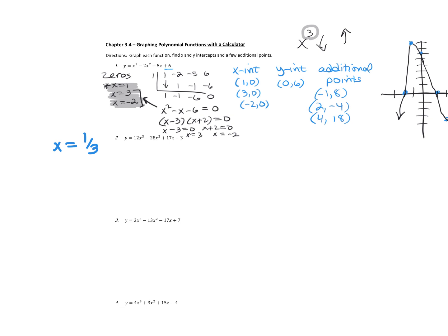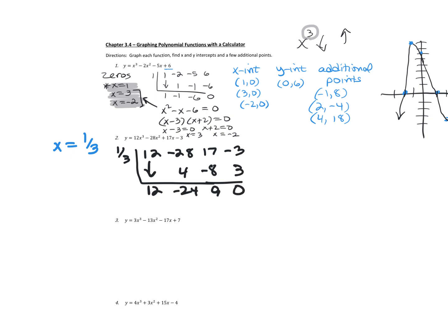The other two zeros visible on the display are also rational. I could display the table and look for any y-values equal to zero — those would also be x-intercepts. Instead of using the trace feature for the other two points, let me show you synthetic division. Once you find one rational zero, put the coefficients in and do synthetic division. Bring down the 12, multiply, add the column, multiply, add the column, multiply, add the column. If you're not getting a remainder of zero, either you found the wrong zero or made a calculation mistake.